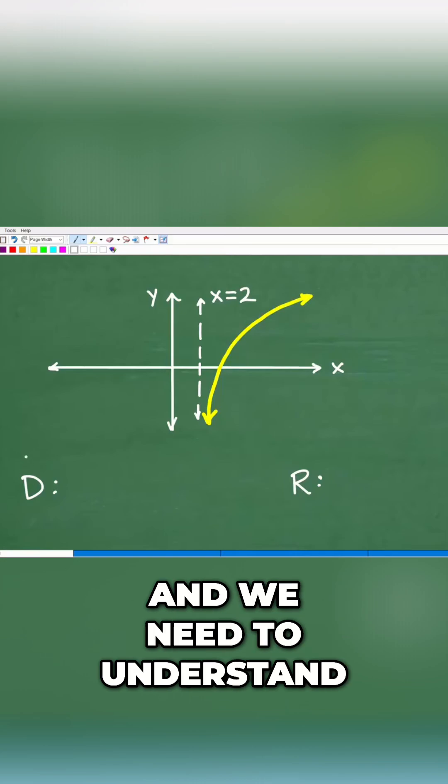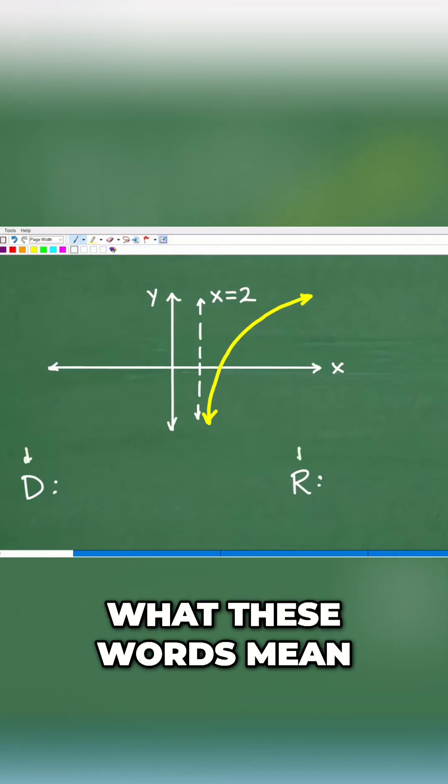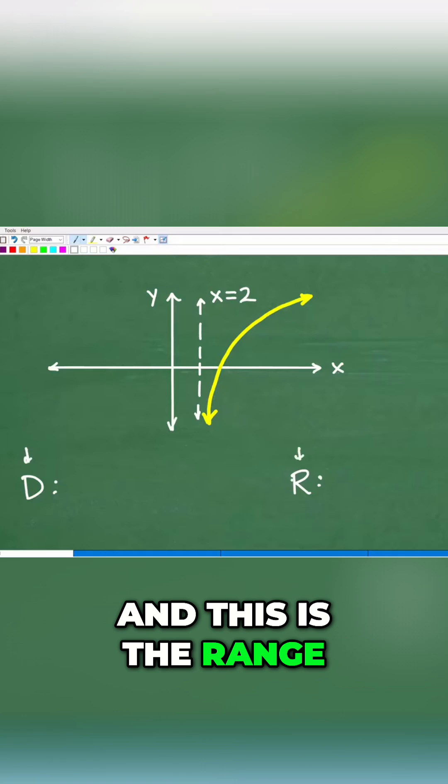All right, so here's our graph, and we need to understand what these words mean. So D here, this is domain, and this is the range.